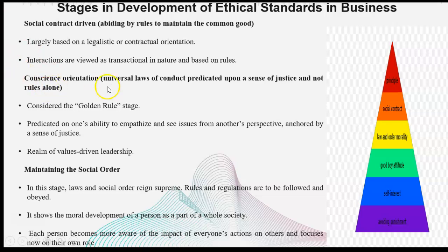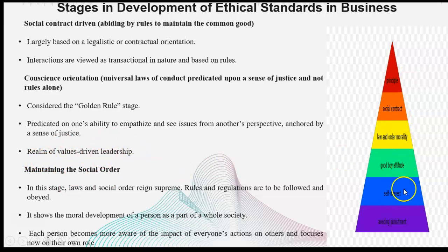Then we have compliance orientation — universal laws of conduct protected by the consequences of justice and not rules alone. We consider this the golden rule stage, protected by one's ability to emphasize issues from another's perspective, anchored by a sense of justice. Then we have the realm of values-driven leadership. Values-driven leadership involves principles, social contract, law and order model, good boy attitude, self-interest, and avoiding punishment — these are basically some of the stages. Good boy attitude means that everyone who is under the moral principles is a good person.